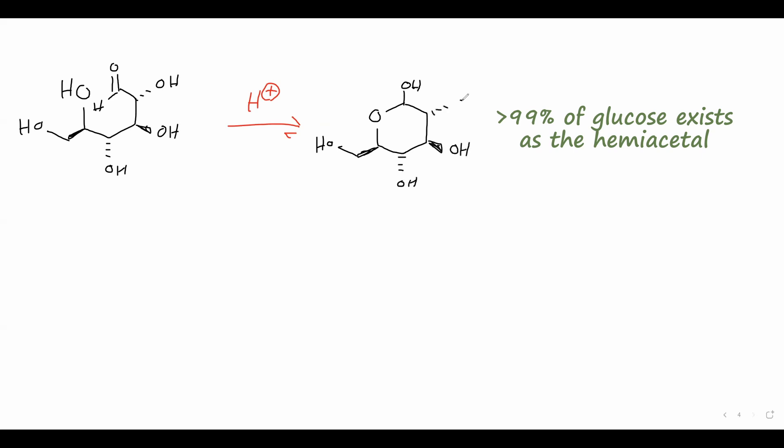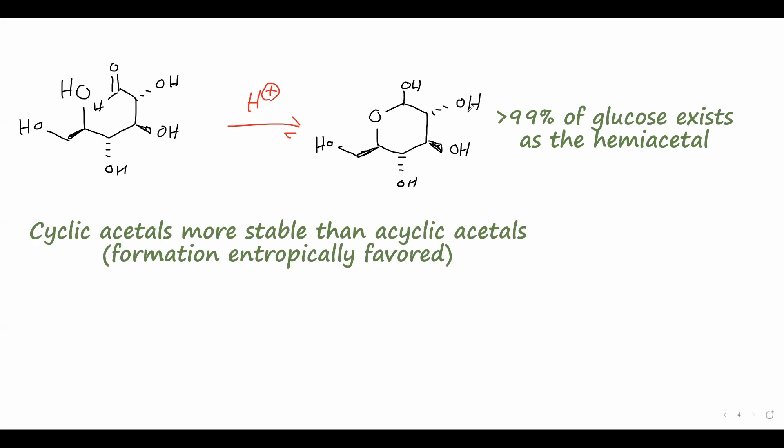They are more stable than acyclic acetals because they are entropically favored. What this means is that with an acyclic acetal, we need to start with one molecule of carbonyl compound and two equivalents of alcohol, but with a cyclic acetal, we only need one alcohol molecule. And this means that the change in entropy of the cyclic acetal formation is more favorable than with the acyclic case.